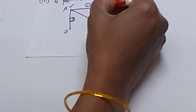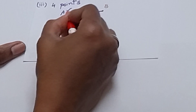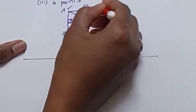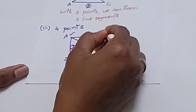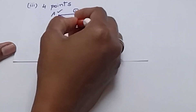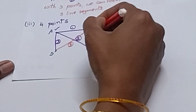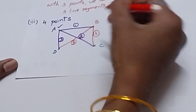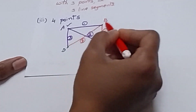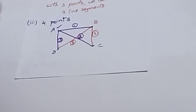Now we move to B. From B, we try to connect all remaining 3 points. B to A — already there, ignore. B to D — this is a new one, counting it as 4th. B to C — this is new, counting it as 5th. From B, 3 points are connected. B is over.